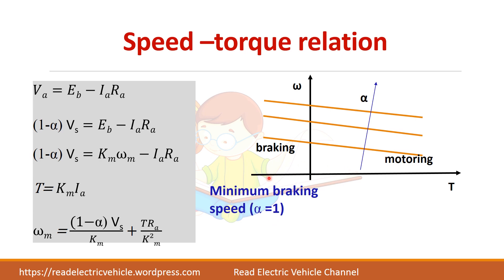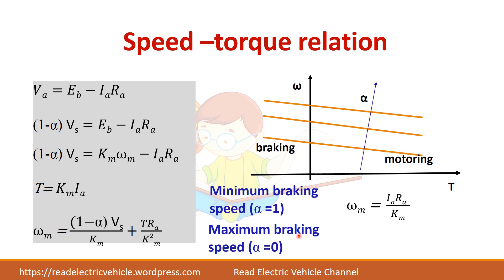Let us find the minimum and maximum braking speeds. The minimum braking speed is found by substituting α = 1. When α = 1, the switch is fully closed (since α = Ton/T, when Ton = T, α = 1), so the first term becomes zero and ωM = IA·RA / KM, or equivalently T/KM². For maximum braking speed, substitute α = 0, giving ωM = Vs/KM + IA·RA/KM.